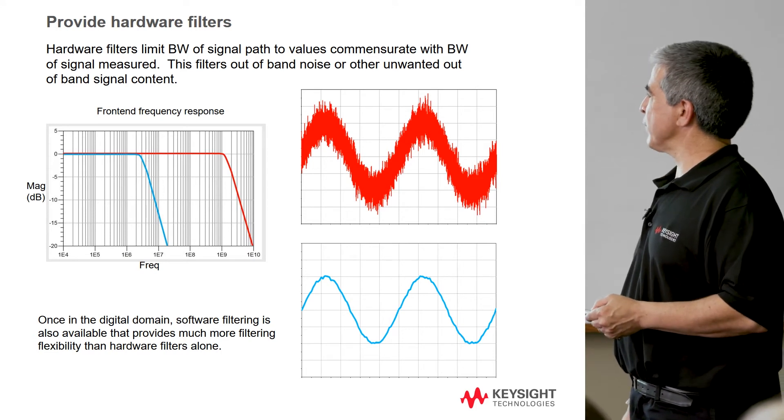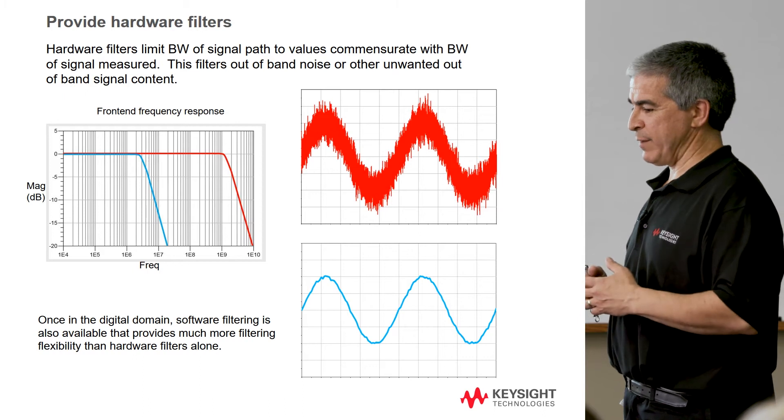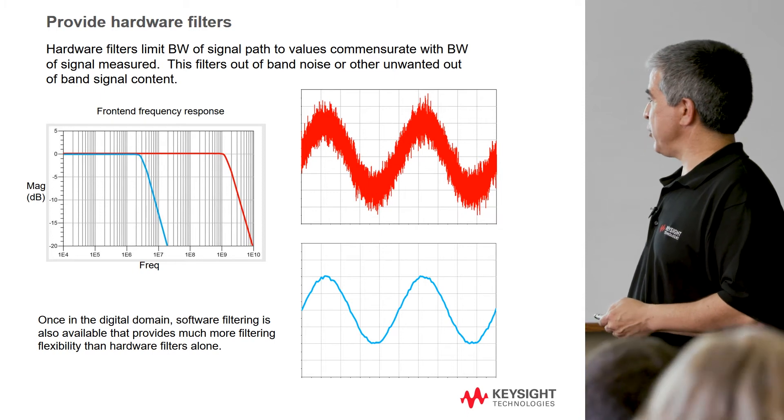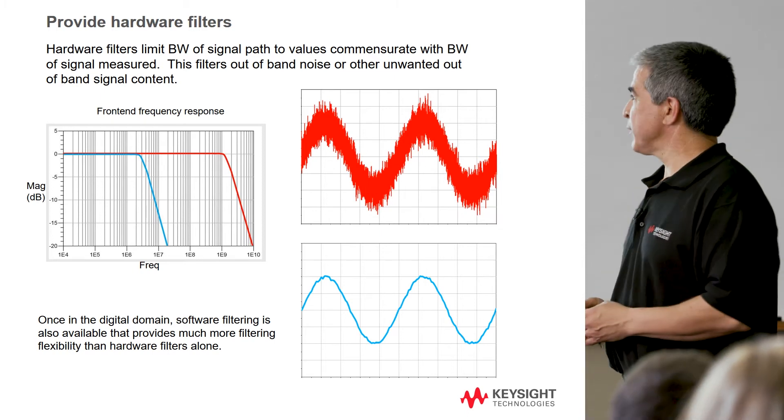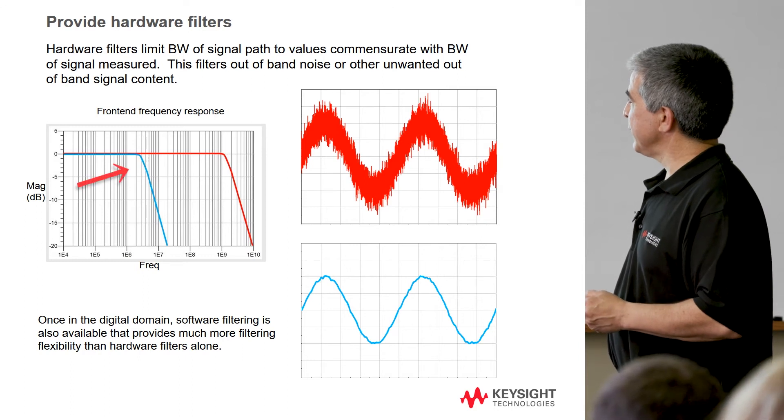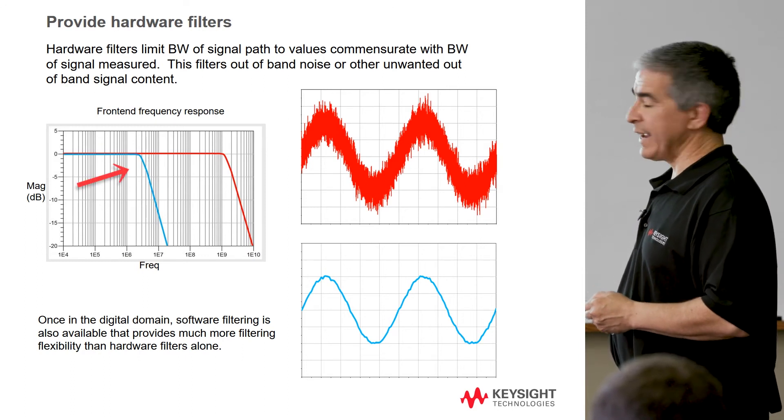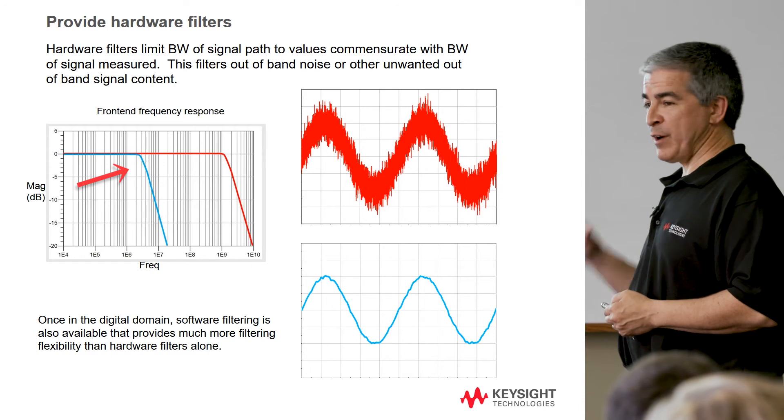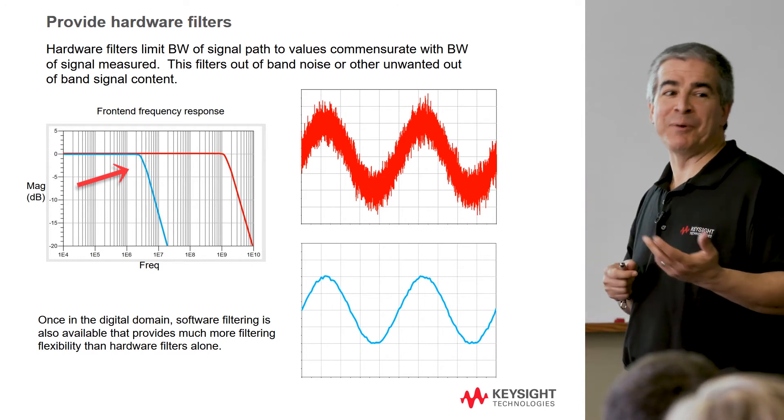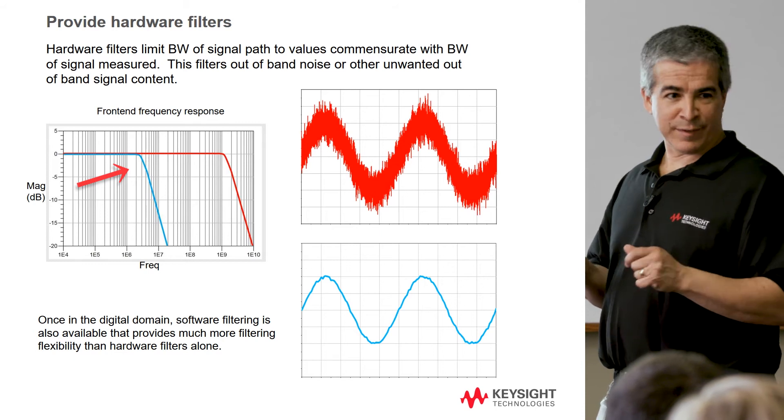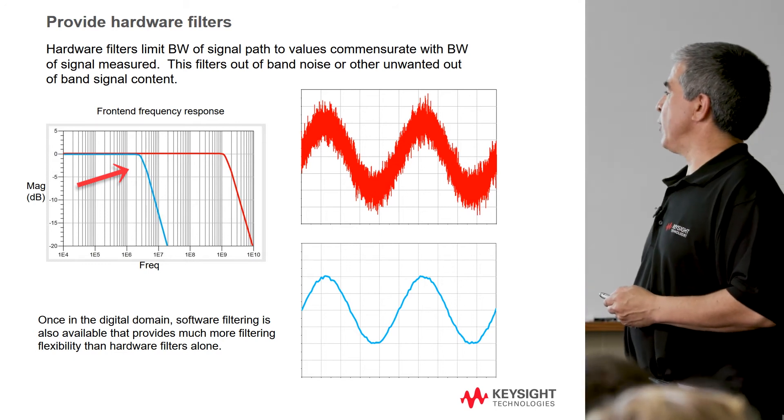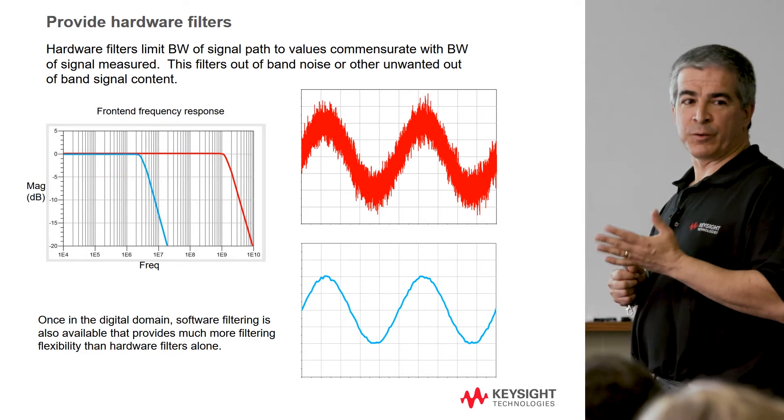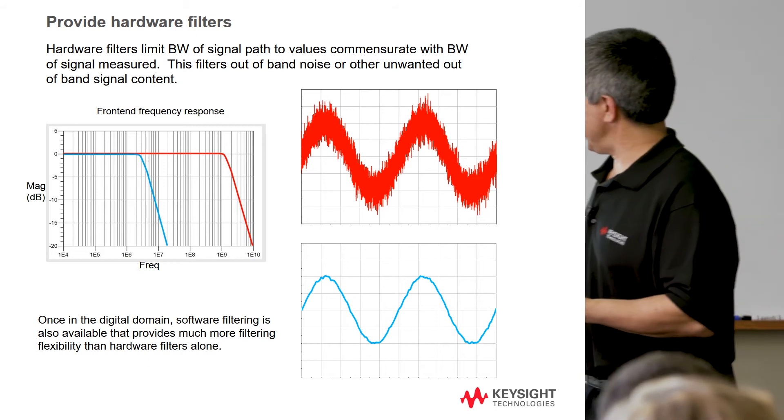About the only downside in terms of software filtering, other than you've got to write the software and you have to have something that can actually do that quickly in a digital engine, is that it doesn't do anything for the signals before they get to the ADC. So, for instance, if I had a software filter here that was set to this and I had a large signal at a gigahertz, for instance, that gigahertz signal is still getting to the ADC, so it can overdrive the ADC, but you're not actually seeing it on screen because we're providing a software filter, so it will act funny. So, even when we do things like provide a software filter, it's good practice to apply the closest hardware filter there to limit the signals before they get to the digitizer.